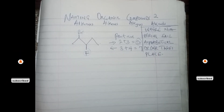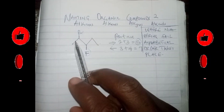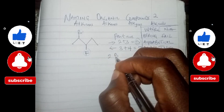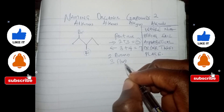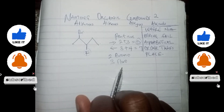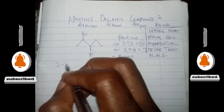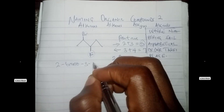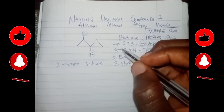Now let's apply alphabetical order. So here, bromo is on carbon two — that's two-bromo. This is carbon three, so that's three-fluoro. Remember that bromo comes before fluoro in alphabetical order, so the full name is two-bromo-three-fluoropentane.